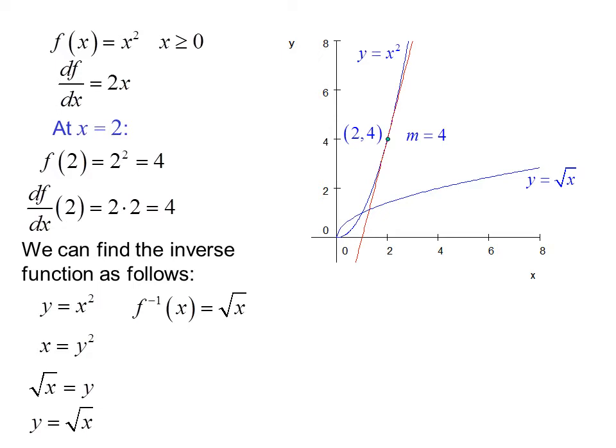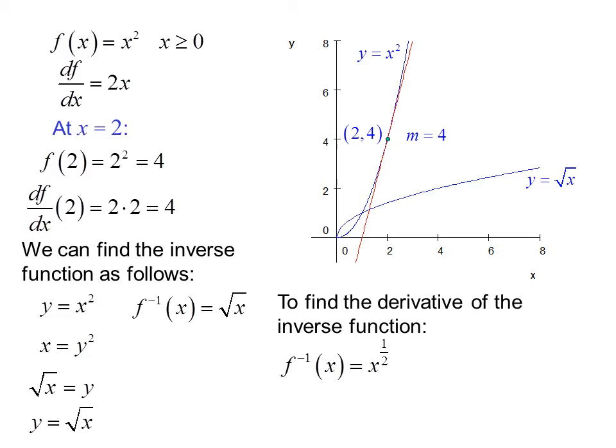There's the graph of y equals radical x. To find the derivative of the inverse function, df inverse/dx equals 1/2 x to the negative 1/2. Remember, we bring the exponent down and then decrease it by 1. So df inverse/dx equals 1 over 2 radical x.